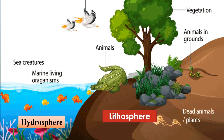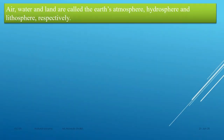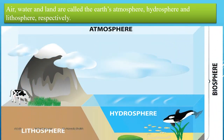Lithosphere is the land which is present on our earth — the entire land, comprising of mountains and the land that you walk on, all comes under lithosphere. Next you have atmosphere — the air that you breathe, the atmosphere above. You cannot actually see air but you can feel it. Air is atmosphere, land is lithosphere, and water is hydrosphere.